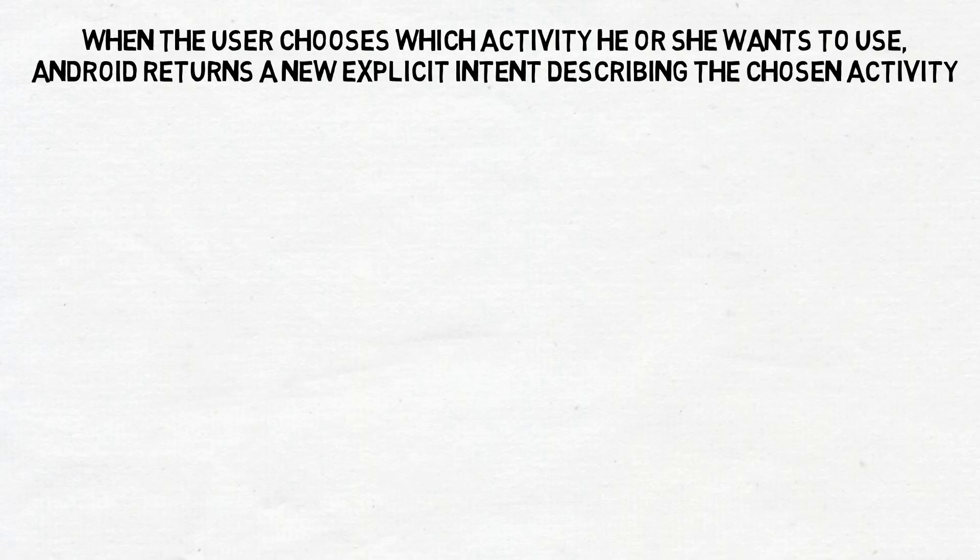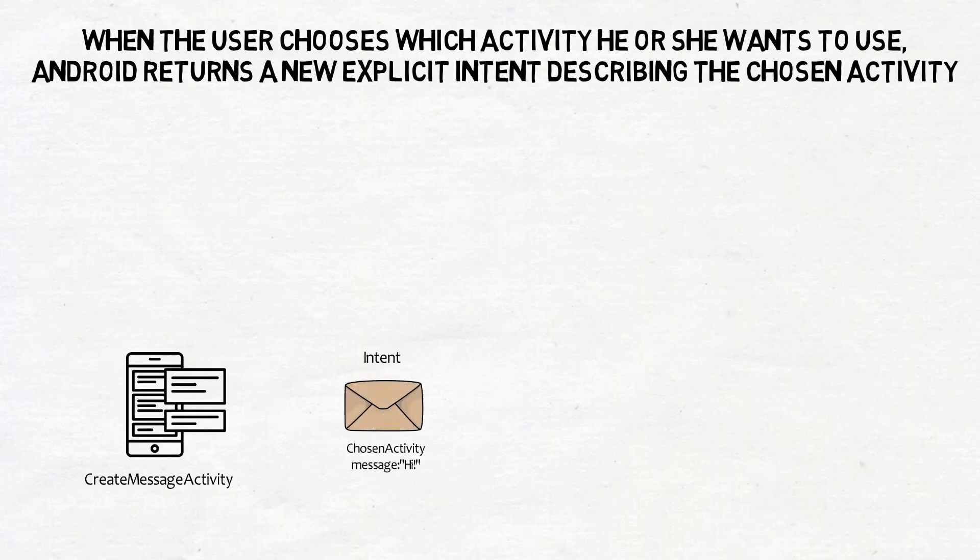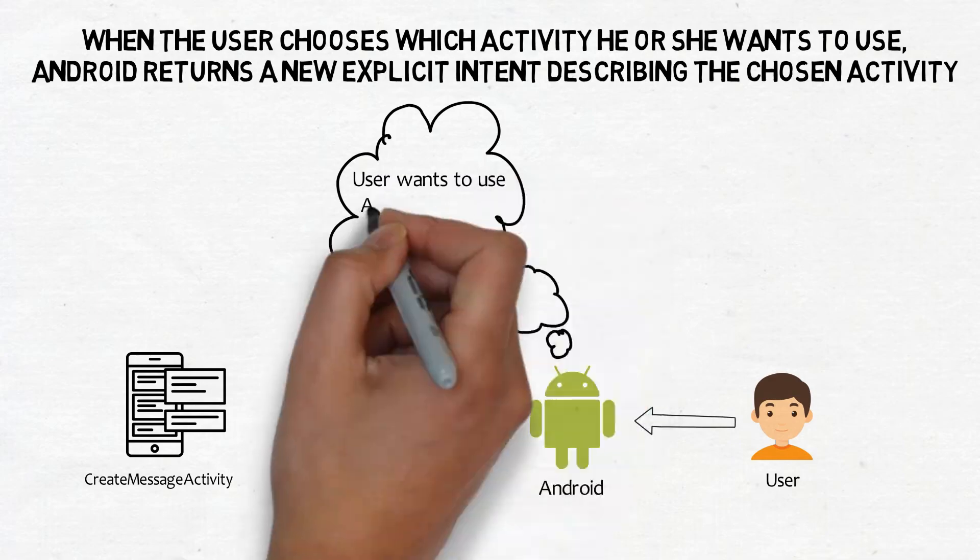When the user chooses which activity they want to use, Android returns a new explicit intent describing the chosen activity.